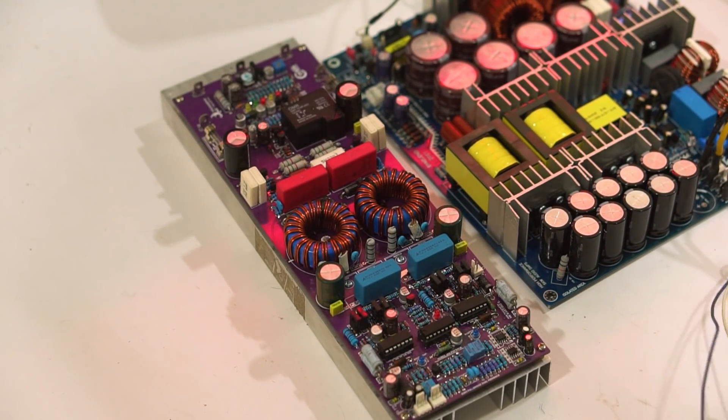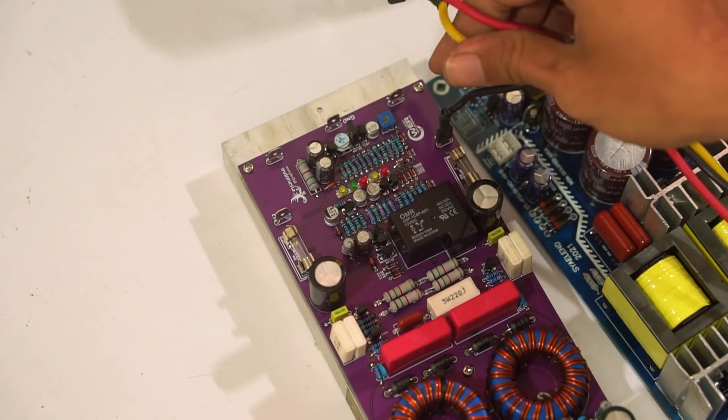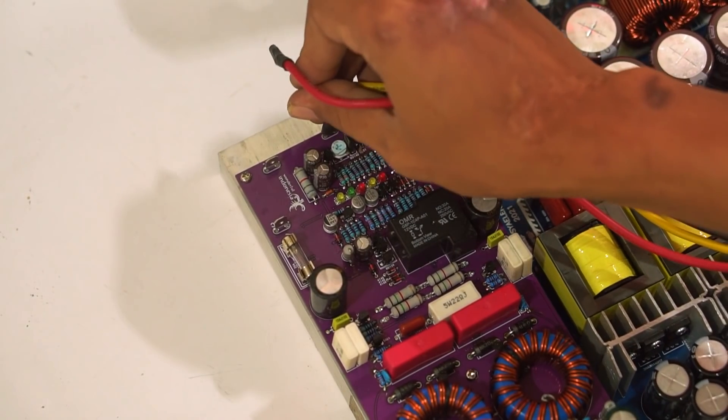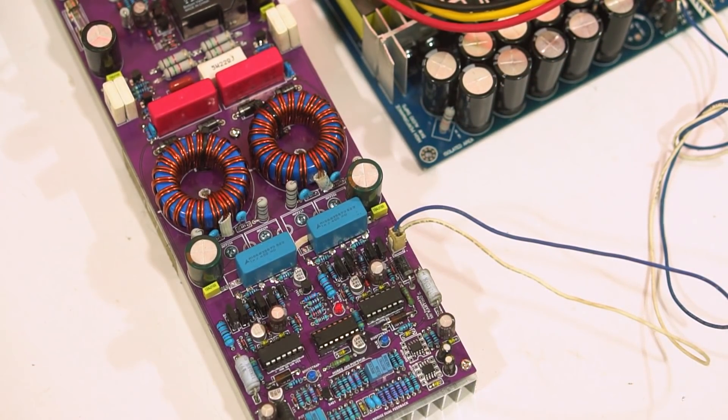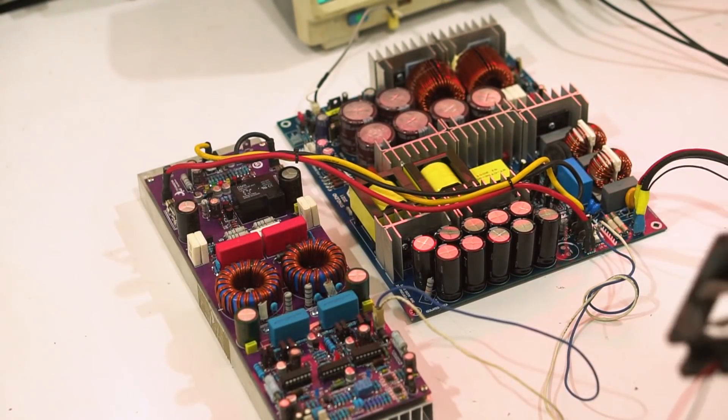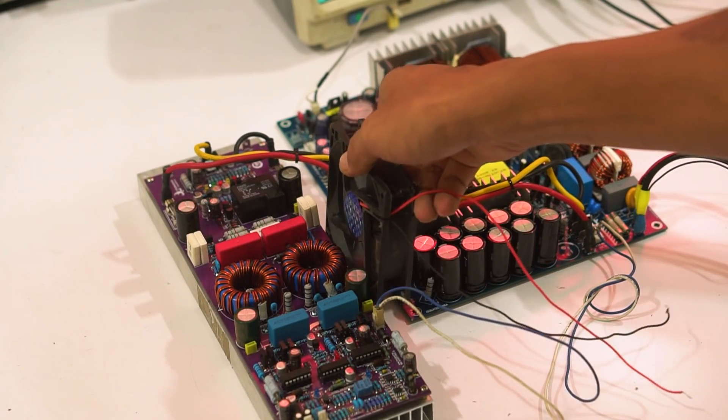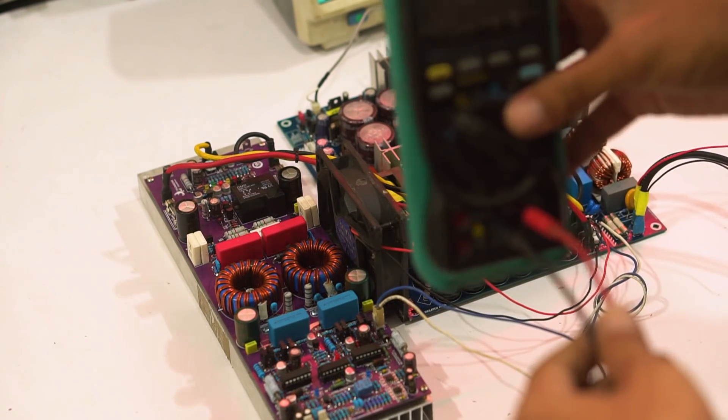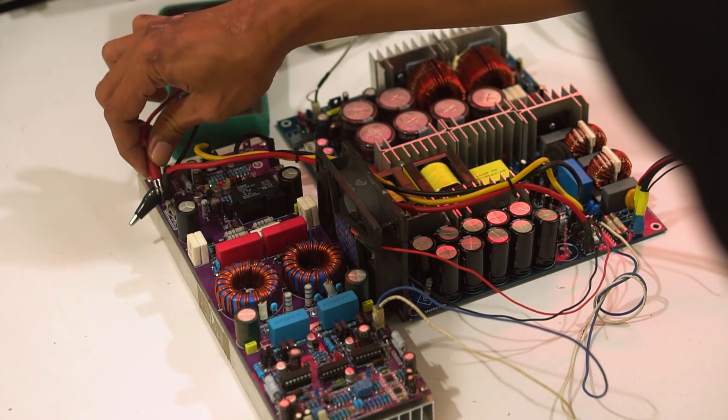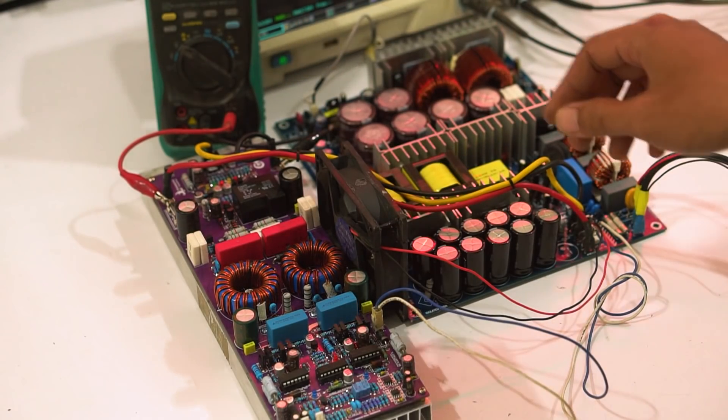Okay, next we install the SMPS to the amplifier kit. Install the main supply cable - black for negative, yellow for ground, and red for positive. Then install the 12V bias supply - blue for positive and white for negative. I'm adding a fan because I will do a direct load test. The fan supply is also taken from the SMPS 12V extra. I'm installing a DC voltmeter on the main supply positive and negative to see the supply voltage when the amplifier is under load.